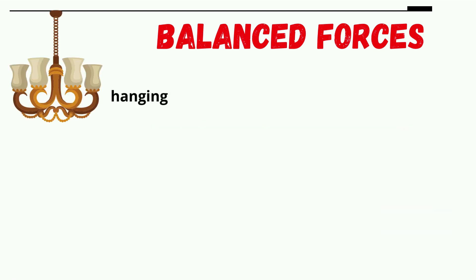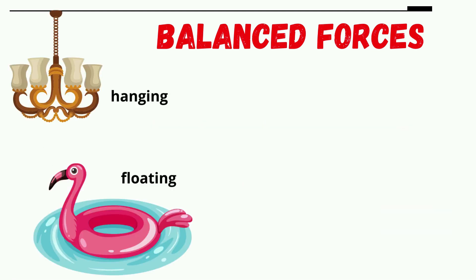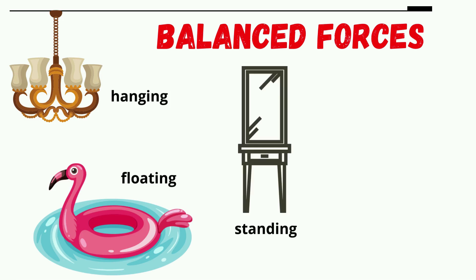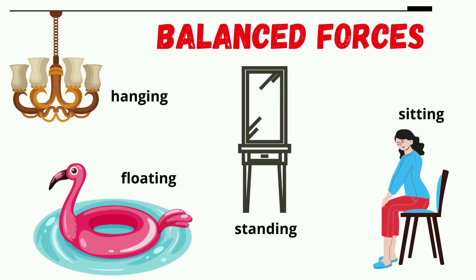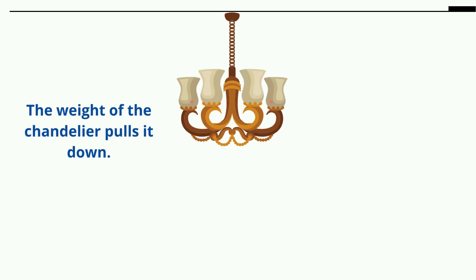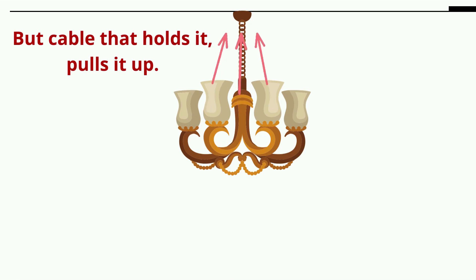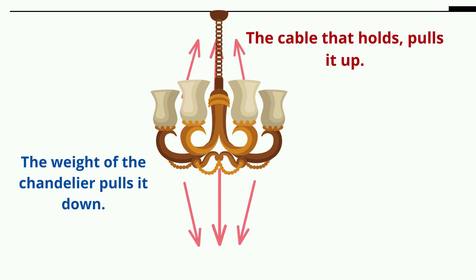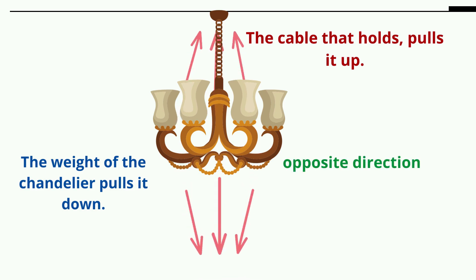Balanced forces are present in hanging, floating, standing, or sitting objects. Let's take for example the chandelier. The weight of the chandelier pulls it down, but the cable that holds it pulls it up. The forces that pull it up and down are balanced, letting the object hang. As you can see, the forces are in opposite directions.